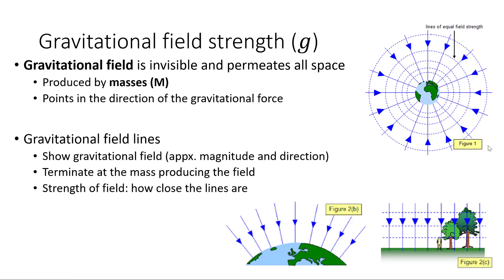Gravity is an action-at-a-distance force that causes masses to attract each other. It's a field force, which means it transmits its force not through contact, but through a gravitational field. A gravitational field is invisible and permeates all space. It shows the direction and strength of the gravitational force. It's produced by masses and points in the direction that the gravitational force would point for an object placed in that field, and the strength of the field determines the strength of the force.